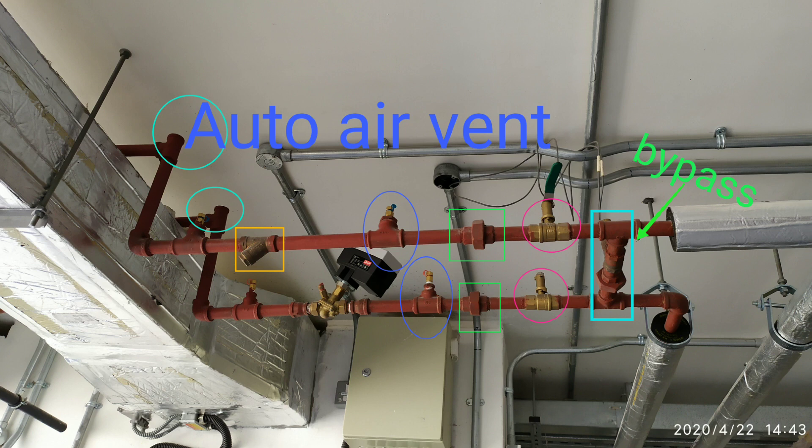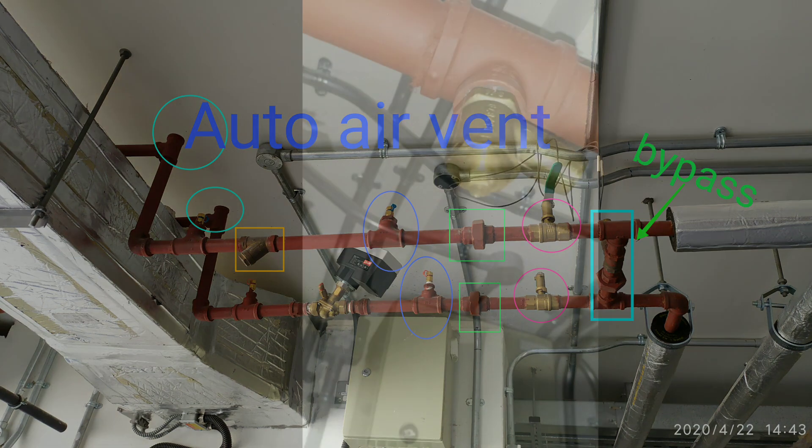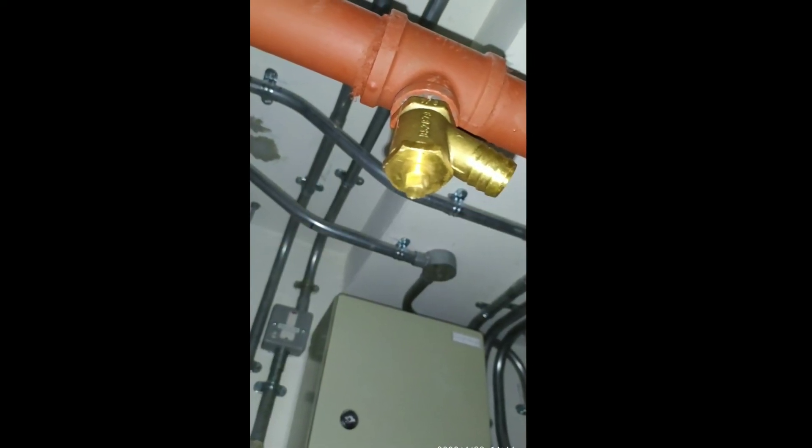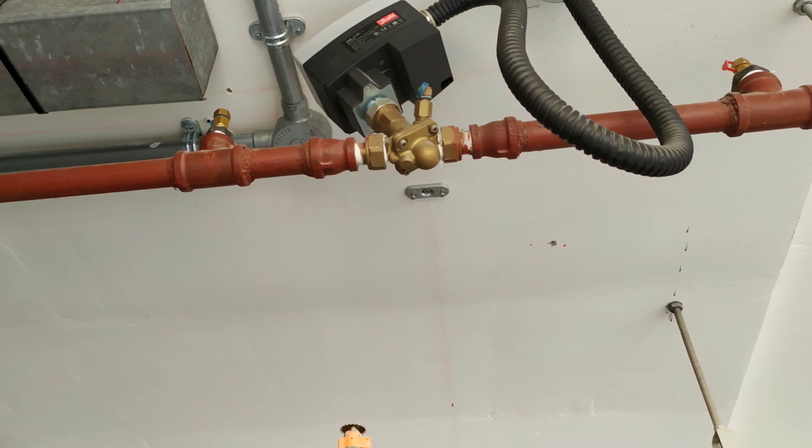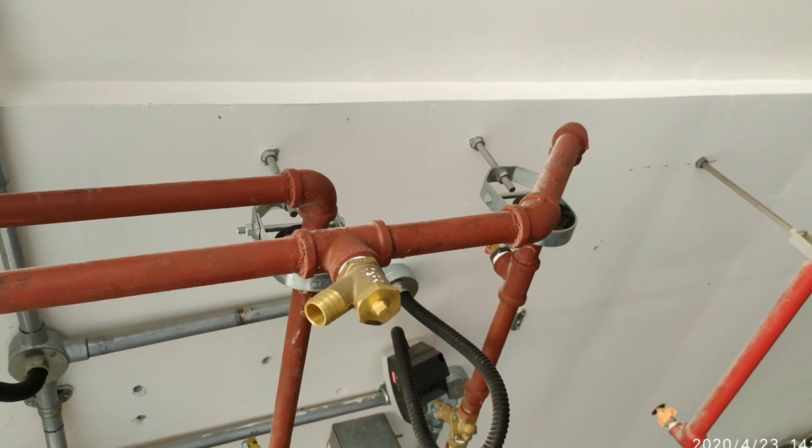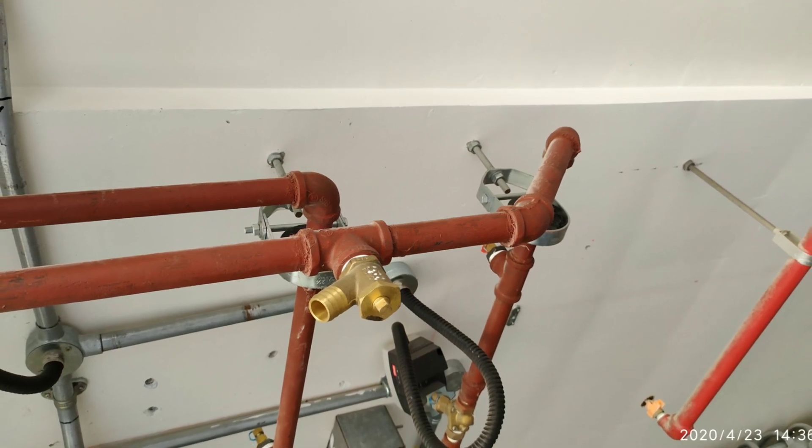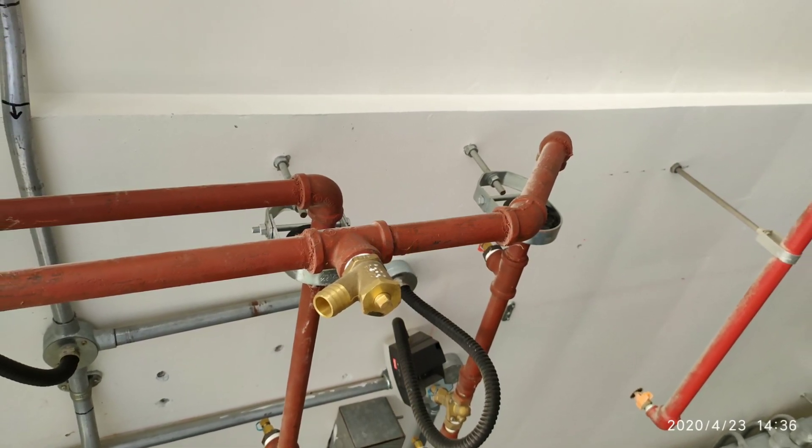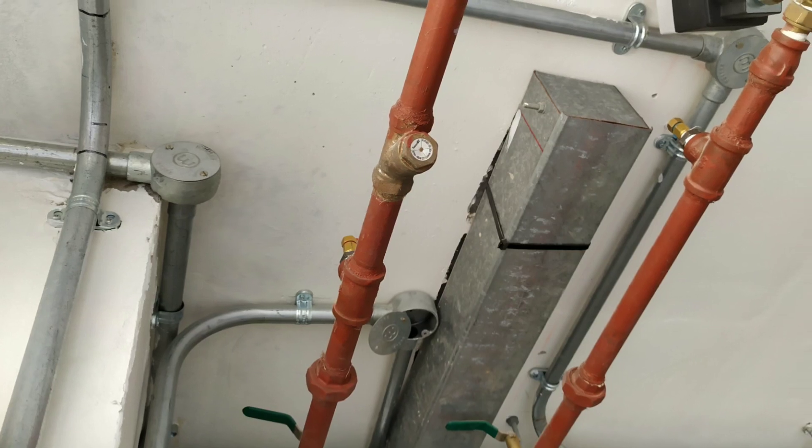Auto air vent. I have depicted all the fittings by some circulars, rectangular, oval shapes. This is the bypass line. This is the drain cock, all these fittings are used. This is the drain cock. This is a strainer.